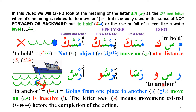'Rasa' means to anchor. Here we have Ra-Sin-Wa. Ra indicates going from one place to another. Seen is the middle letter, again meaning to hold — not to go. Wa indicates that it was moving. Wa has the meaning of something missing, and in this case the movement is missing — movement becomes inactive when the action is complete. So Wa means: before, it was moving, but when anchored it is no longer moving.